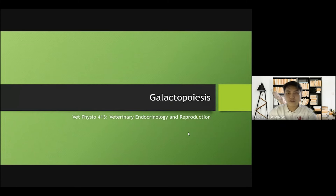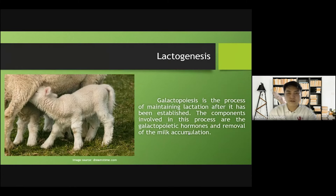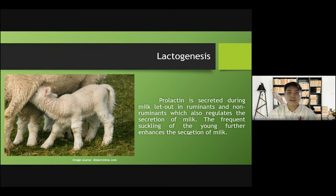Lastly, we need to talk about galactopoiesis. Galactopoiesis is the process of maintaining lactation after it has been established. The components involved in this process are the galactopoietic hormones and removal of milk accumulation. Prolactin is secreted during milk let-down in ruminants and non-ruminants, which also regulates the secretion of milk. The frequent suckling of the young further enhances the secretion of milk.